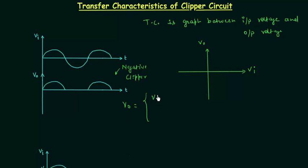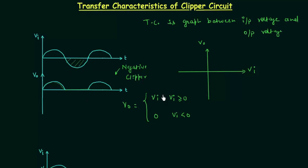We will first find out the value of output voltage VO. VO is equal to VI when VI is greater than or equal to 0, and output voltage VO is equal to 0 when VI is less than 0. You can see VO is the same as the input waveform when VI is positive, and VO is equal to 0 when VI is negative.